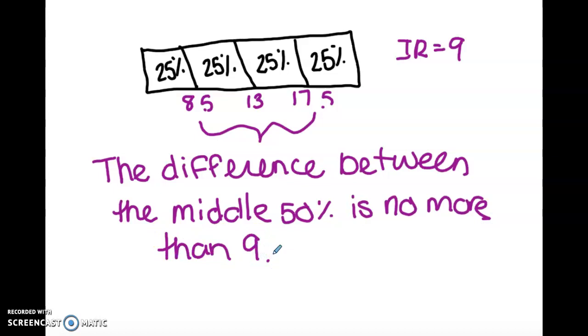So what this means is any number in this middle 50%, in between Q1 and Q3, when we had all those numbers lined up, no matter what numbers we choose to subtract, the difference will not be more than 9. I want you to take this information and try to do a couple examples in the Google Form.